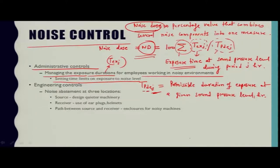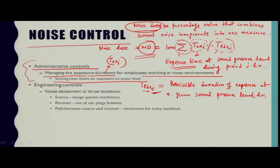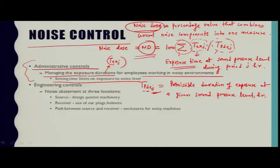Scheduling involves balancing the time spent in a noise environment against offsetting time spent in a quiet environment. Another form of administrative control involves education and training of workers, making them aware of the potential hazards of intense noise and the importance of using engineering controls installed for noise abatement. The importance of administrative noise control must not be minimized, but it is generally agreed that a more desirable and potentially more effective approach is through engineering control.